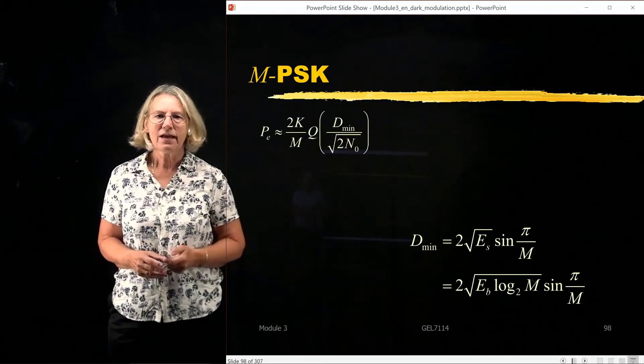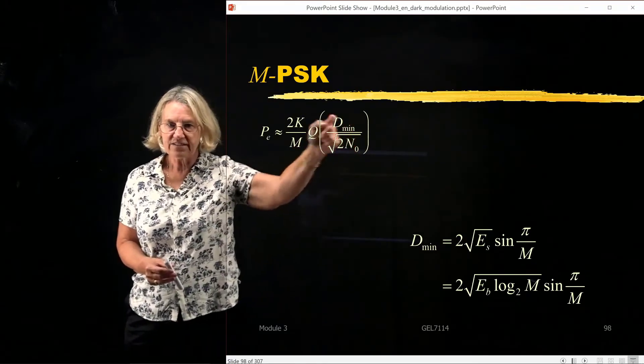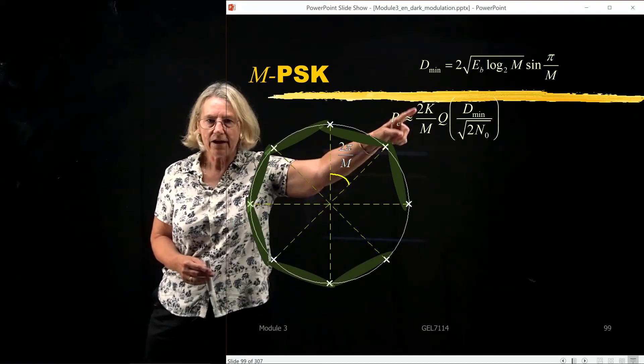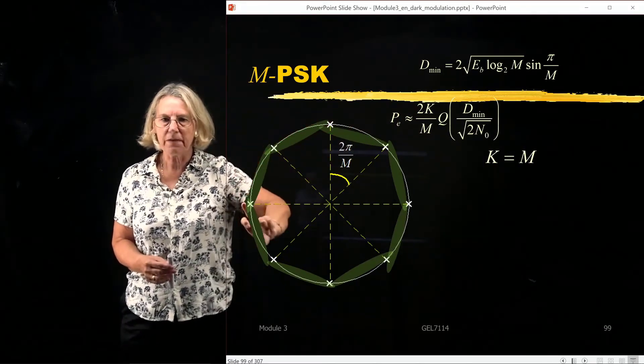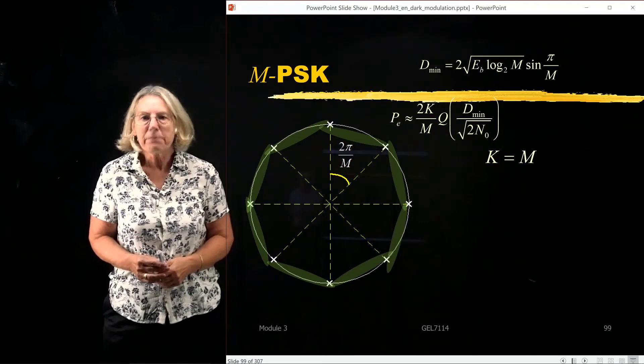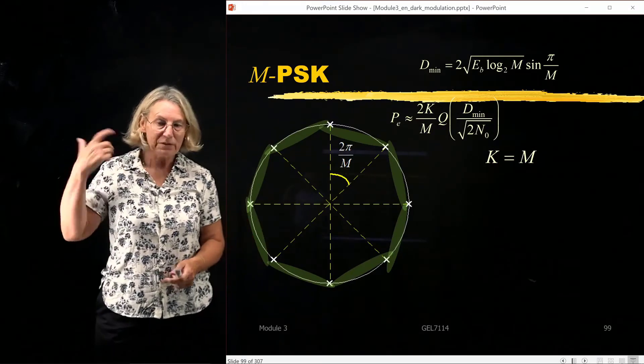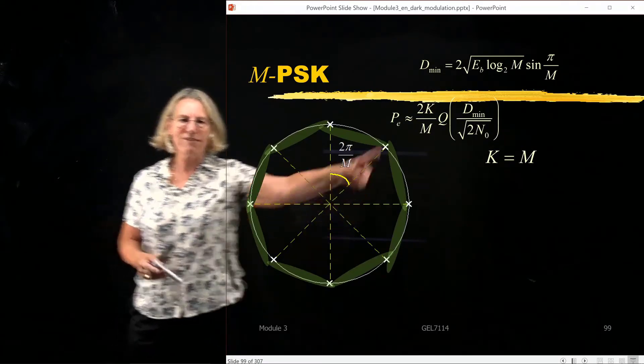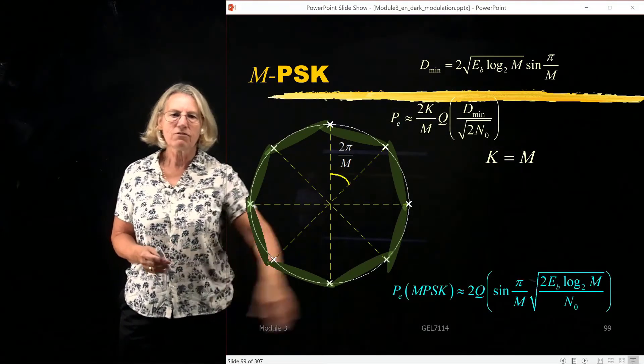So I take this D_min and I'm going to plug it into this general equation. So this is the general equation. Now I have calculated the D_min for M-PSK. And what else do I need? I need to find K. How many pairs are at this minimal distance? And of course, at the minimal distance, they're all the adjacent pairs. That's how many I need to factor in. And for M-PSK, K, the number of symbols that are at the minimal distance, are equal to the number of symbols that are adjacent, which is just equal to M. So now I have M. I have D_min. And I can plug them in and come up with a general expression for M-PSK.